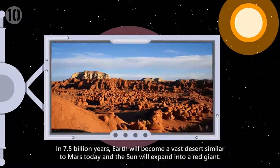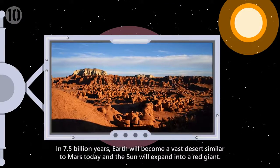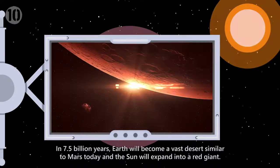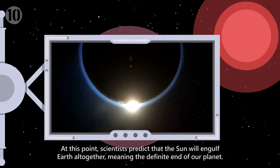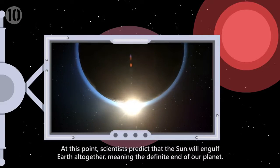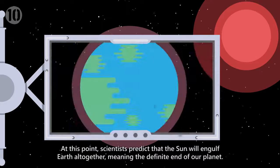In 7.5 billion years, Earth will become a vast desert similar to Mars today, and the Sun will expand into a red giant. At this point, scientists predict that the Sun will engulf Earth altogether, meaning the definite end of our planet.